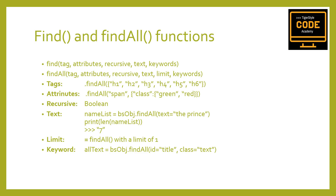In all likelihood, 95% of the time you will find yourself only needing to use the first two arguments: tag and attributes. However, let's take a look at all of the arguments in greater detail. The tag argument is one we've seen before. You can pass a string name of a tag, or even a Python list of string tag names — for example, the list of tags shown here.